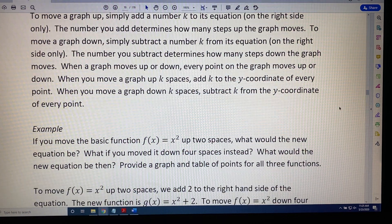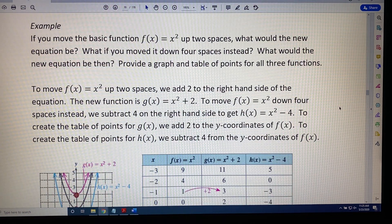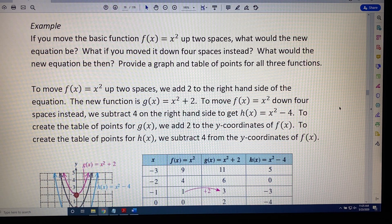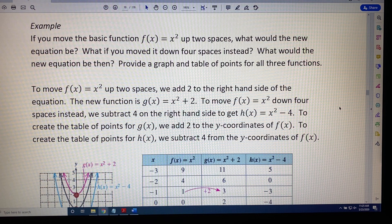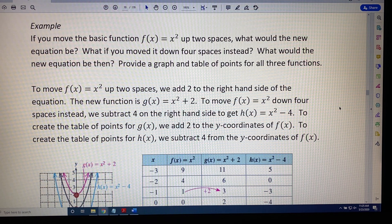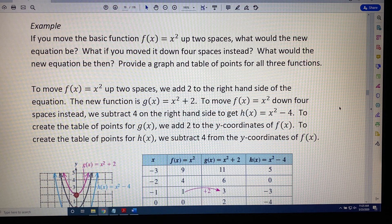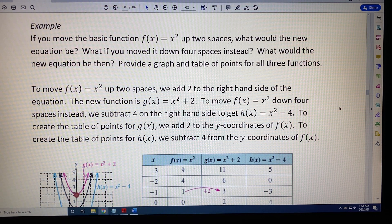Let's look at an example. If you move the basic function f(x) = x² up two spaces, what would the new equation be? What if you moved it down four spaces instead? What would the new equation be then? Provide a graph and table of points for all three functions.